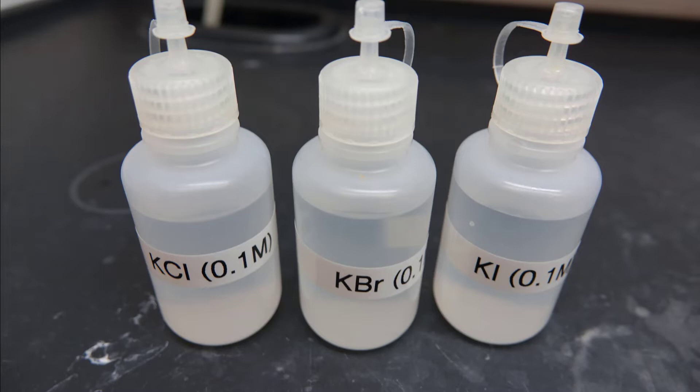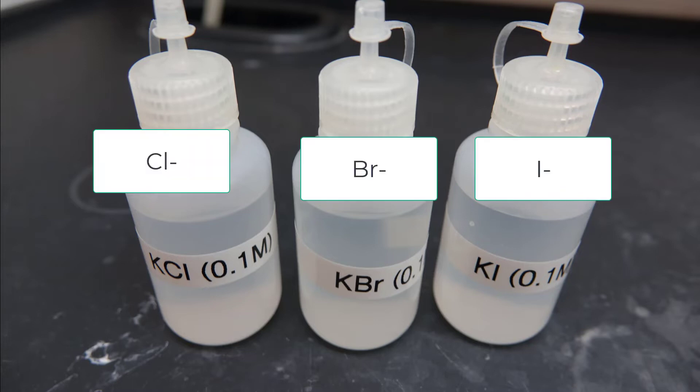You cannot add an ion by itself so it has to be part of a neutral molecule. What we really want from these is the Cl minus, the Br minus, and the I minus. The potassium is just along for the ride and we can ignore it for our experiment.